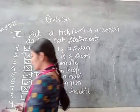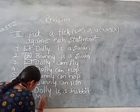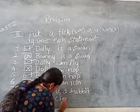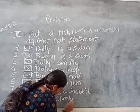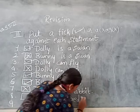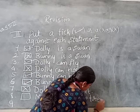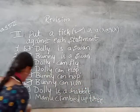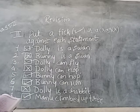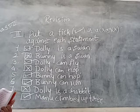Next: Manu climbed up a tree. Manu climbed up a tree — how did he climb up the tree? Yes, he climbed. So for that, take the right mark.